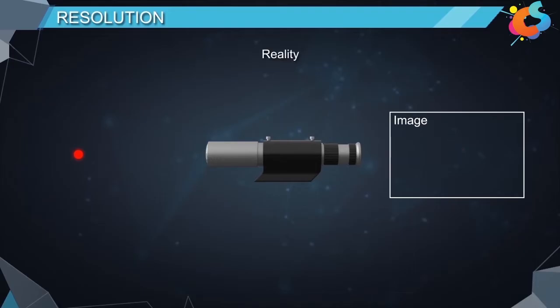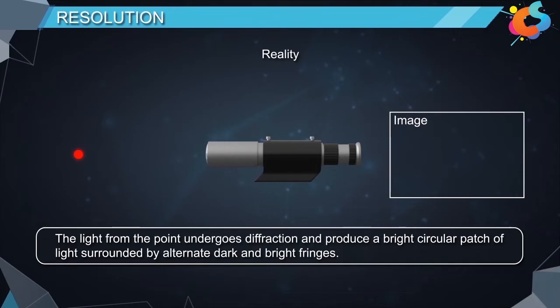However, in reality the light from the point undergoes diffraction and produces a bright circular patch of light surrounded by alternate dark and bright fringes.